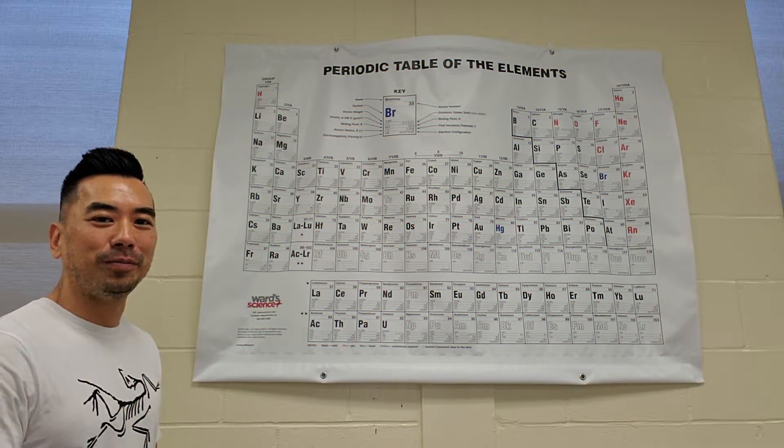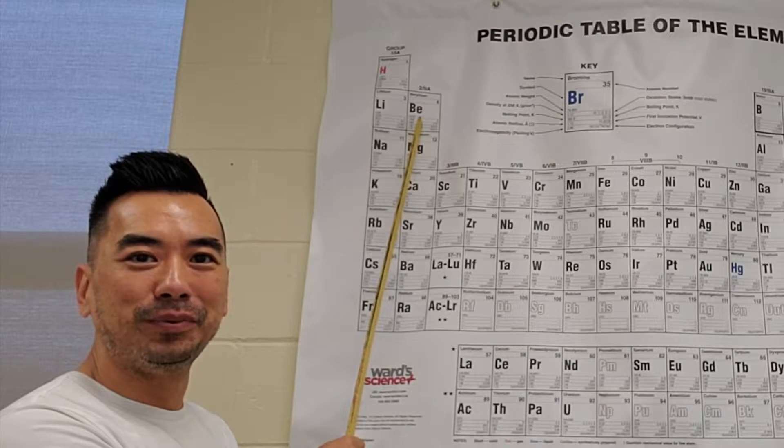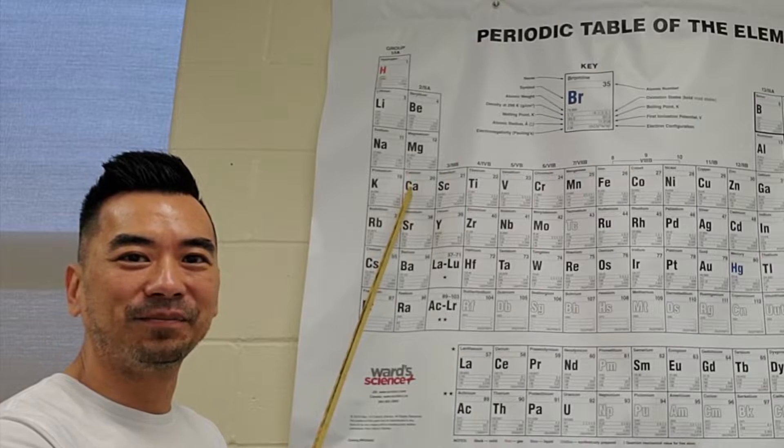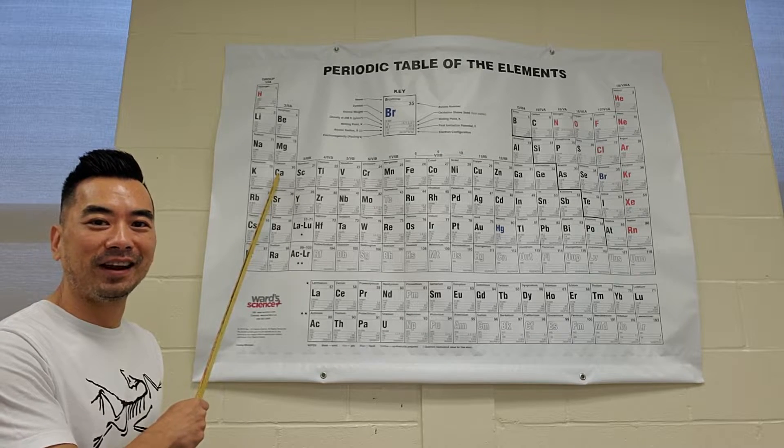The alkaline earth metals occupy the second group of the periodic table and they include beryllium, magnesium, and calcium. The alkaline earth metals aren't as reactive as the alkali metals, but they are still reactive.